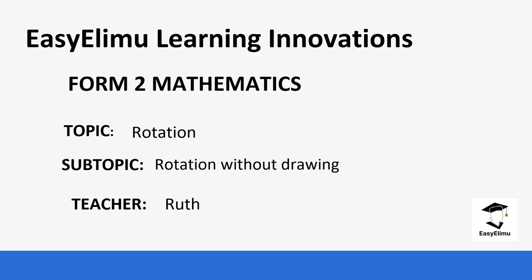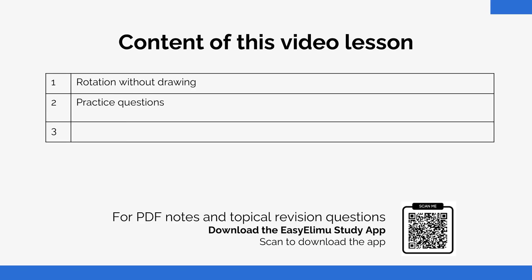Welcome to EZLIM Learning Simplified. Today we are going to be learning Form 2 mathematics, and our topic is rotation. We are going to rotate specific points without actually drawing. In the last two lessons we looked at rotating along the Cartesian plane from the origin — you can go back and check the previous videos.